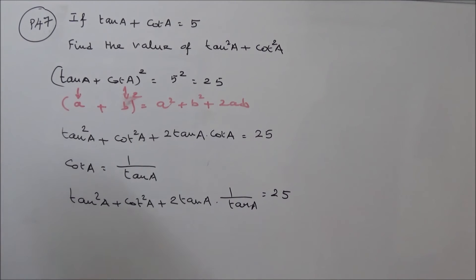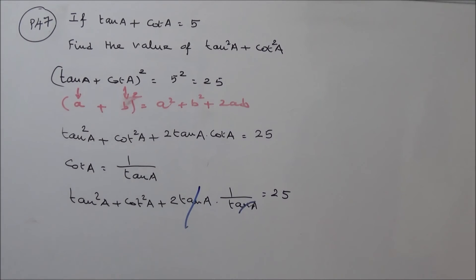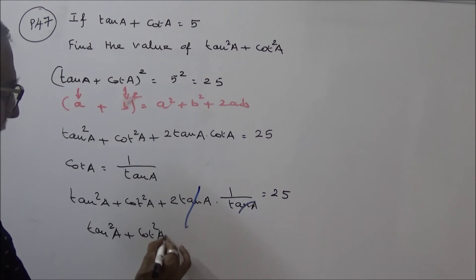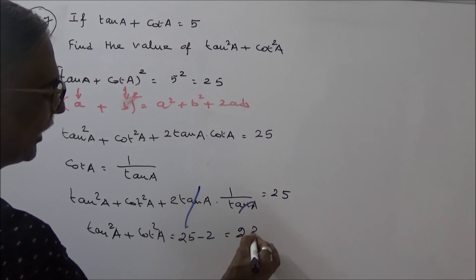Here, these two terms get cancelled. This term gets cancelled. We get tan square A plus cot square A is equal to 25 minus 2, that is equal to 23.